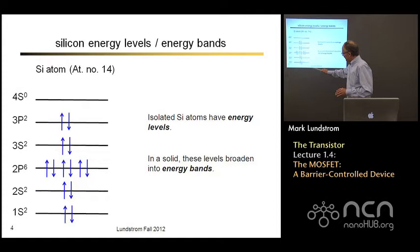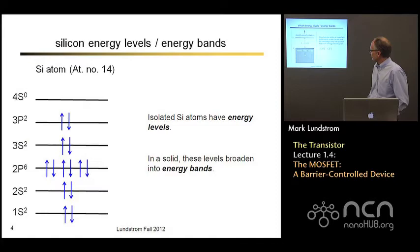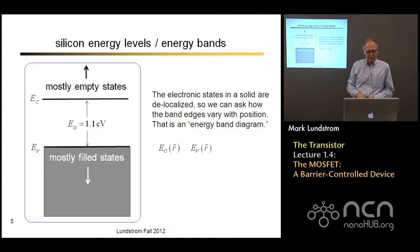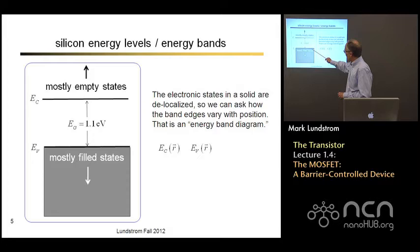An energy band diagram is not an energy level diagram. We talked about isolated silicon atoms where we have individual energy levels. In a solid, these energy levels become energy bands. We sketch these energy bands — just the uppermost ones. The top of the valence band, below which most states are filled, then an energy gap (for silicon it's about 1.1 electron volts), and then the bottom of the conduction band, above which most states are empty. In a crystal, the electrons are delocalized and free to move throughout the crystal, and these energy bands extend throughout the crystal.